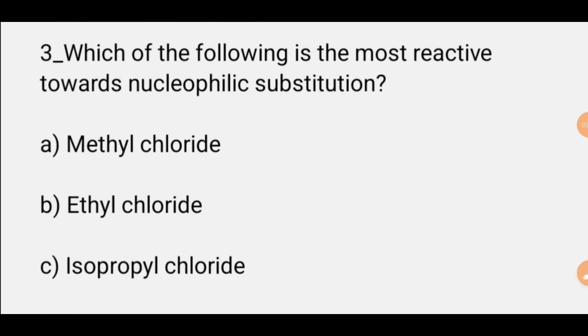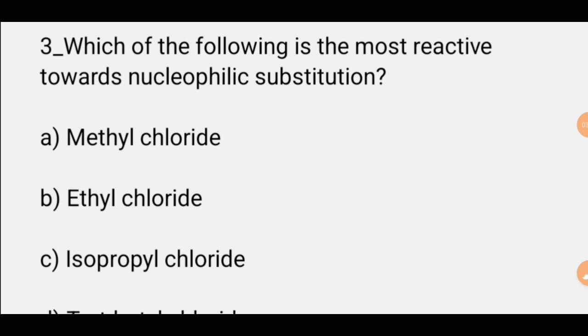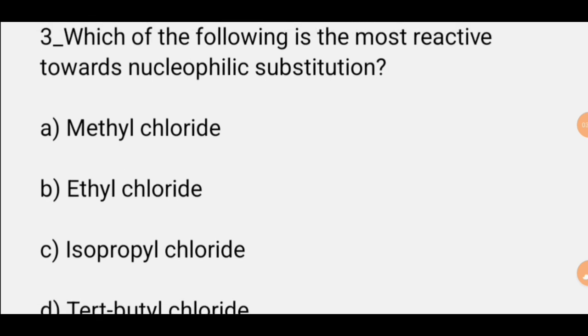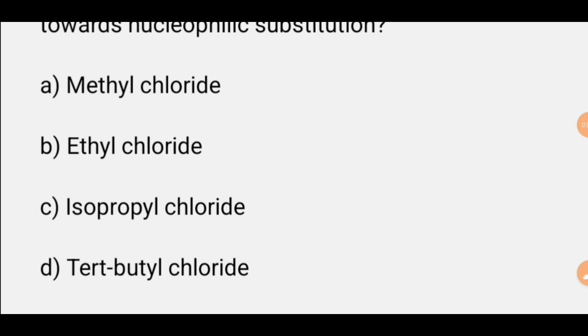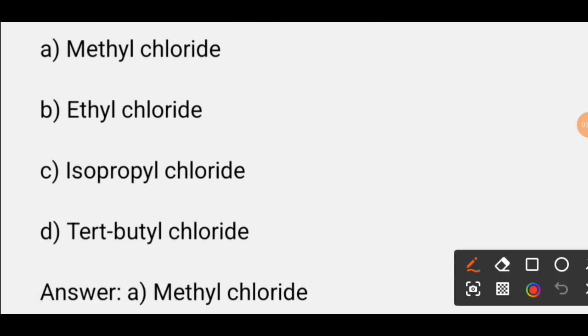MCQ number three: Which of the following is the most active toward nucleophilic substitution? Options are methyl chloride, ethyl chloride, isopropyl chloride, or tert-butyl chloride. The correct option is A, methyl chloride.